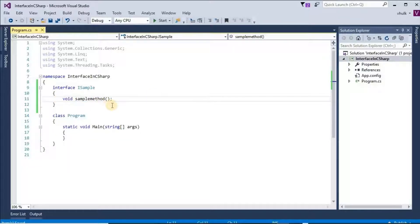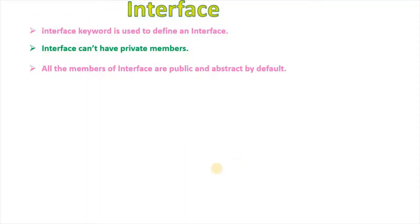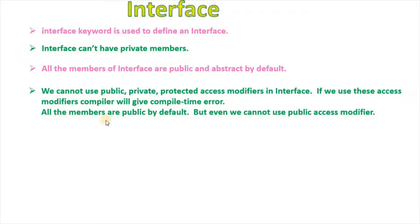This method is an abstract method, and an abstract method must be implemented in other classes. So this method must be public. All the members of an interface are public and abstract by default. We cannot use public, private, or protected access modifiers in an interface. If we use these access modifiers, the compiler will give a compile-time error.